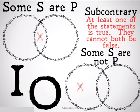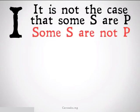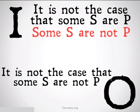We're allowed to do a couple of arguments with this. We can do, it is not the case that some S are P, and conclude from that that some S are not P. Because if it's not the case that there is at least one S that's a P, there has to be at least one S that's not a P.